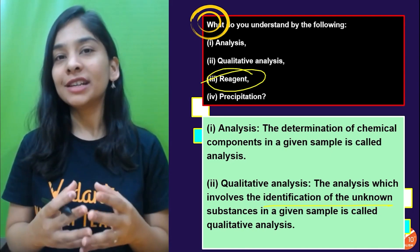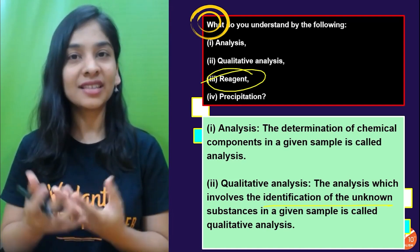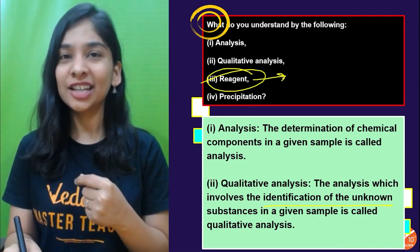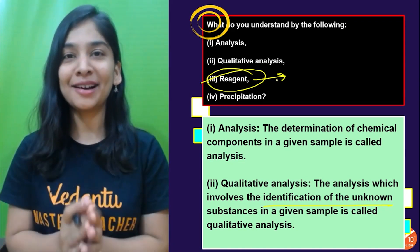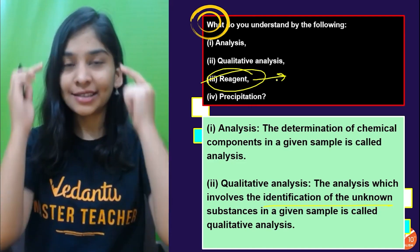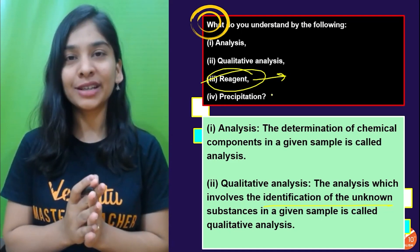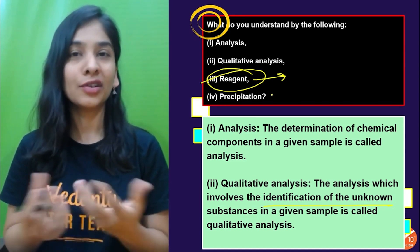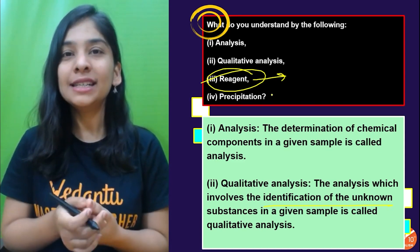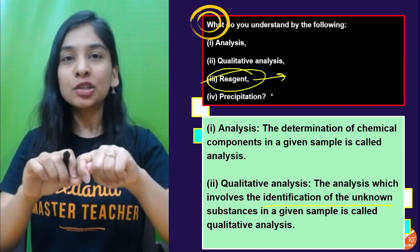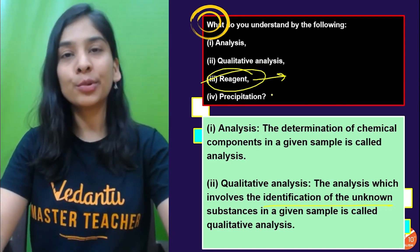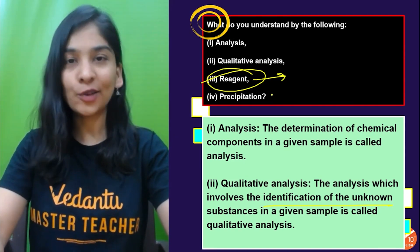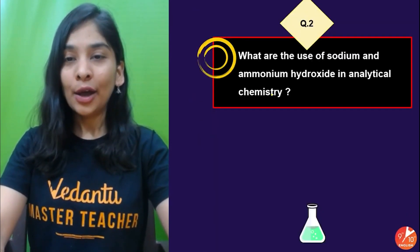A reagent is used in a chemical reaction, reacts with certain substances, and even after reacting, comes out as a product that we can recover. Precipitation is a type of reaction — specifically a double displacement reaction — where you mix two aqueous solutions and one of the products is an insoluble substance that settles at the bottom of the test tube, called a precipitate.